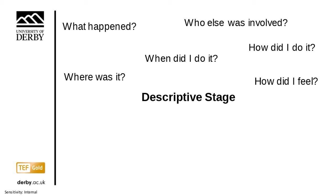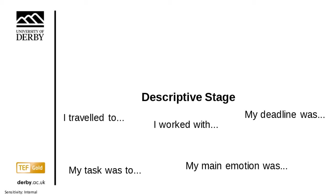The temptation is to stick at 'what' — this is what happened. But think about these other things: where were you located, who else was there, when did you do it, how did you do it, and how did you feel? All of that brings extra detail to your description. Some people might find sentence starters more helpful than questions: 'I travelled to' (a where question), 'I worked with' (covers your who), 'my deadline was' (covers when), 'my task was to', 'my main emotion was'. Experiment and find what works best for you to get that richness to your description.